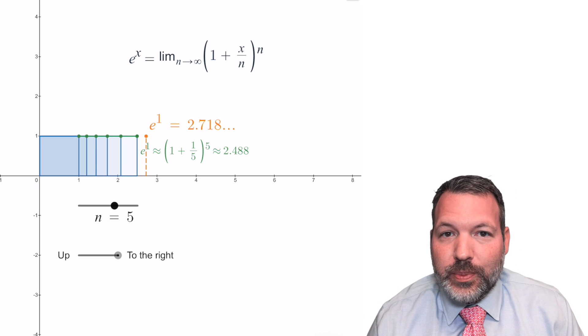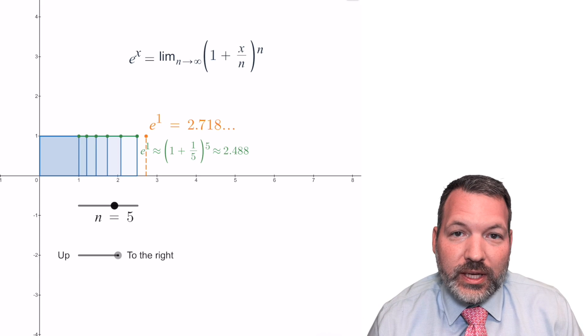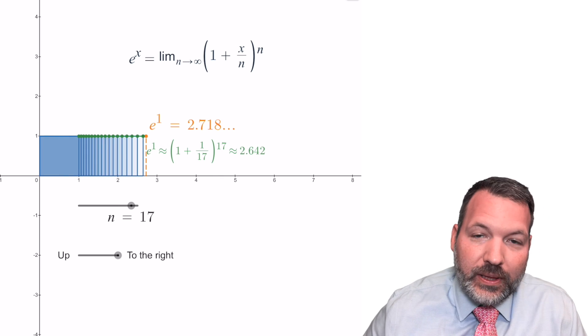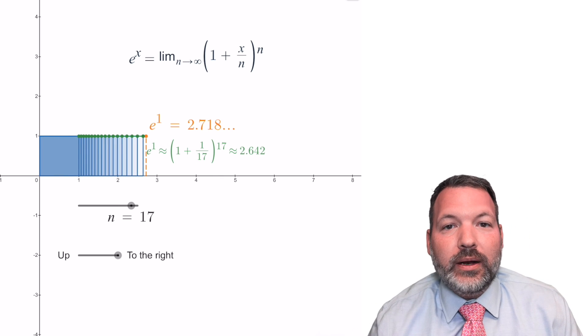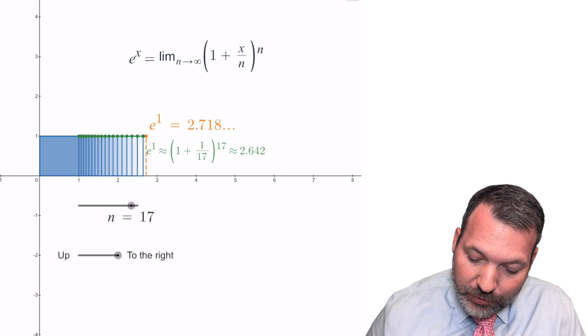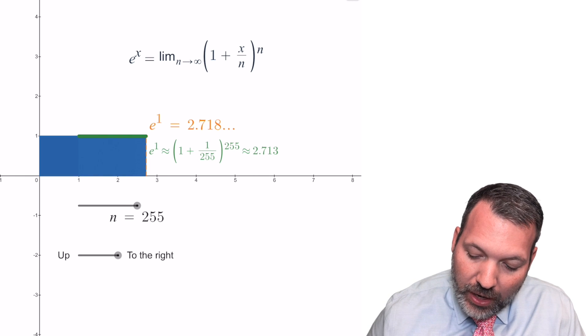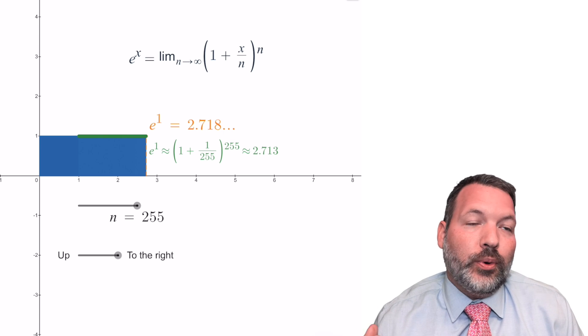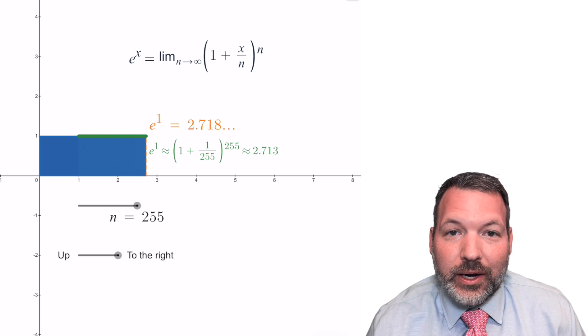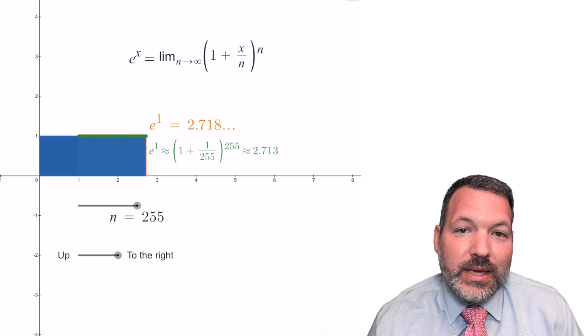Typically, we let x be some whole number like 1 for example, and then we divide 1 into smaller and smaller bits, but then we multiply over and over again that number of times, that n number of times. As we do this for something like 1, you can see that the number we get gets closer and closer to 2.7182818284590, etc. That is, it gets closer to e.